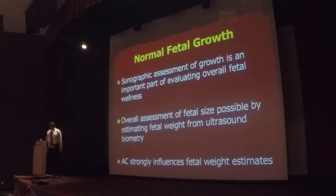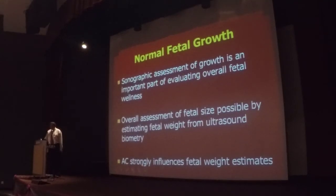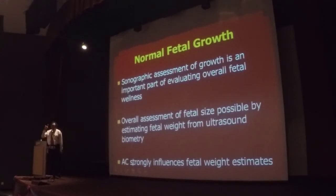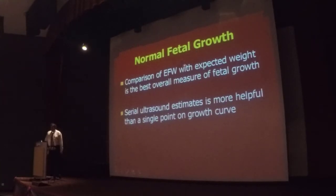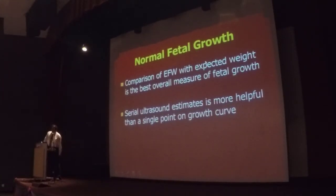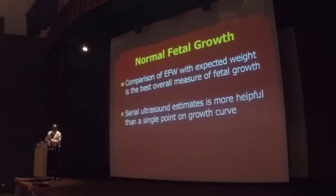Abdominal circumference is actually a very strong indicator for fetal weight. AC specifically measures the soft tissue, which reflects the fetal growth pattern. A comparison of the estimated fetal weight and the expected weight is the best overall measure of fetal growth. On a graph, we should be able to plot and see whether the baby is growing according to the expected fetal weight. Sometimes we cannot do this with just one reading — we need to serially look at it and reassess.